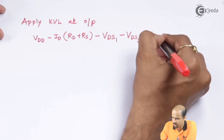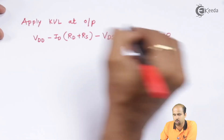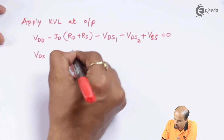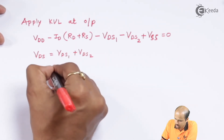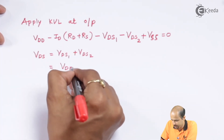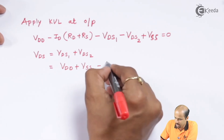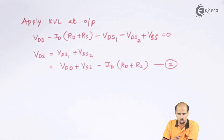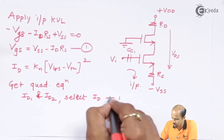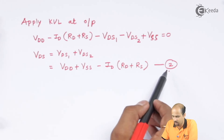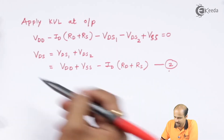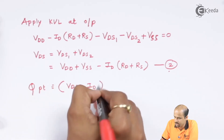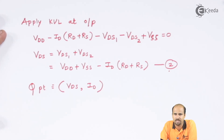From the output KVL, we get the combined VDS: VDS1 plus VDS2 equals VDD plus VSS minus ID·(Rd plus RS). This is equation number two. From equation one we found ID, and from equation two we find the total VDS. The Q-point is therefore (VDS, ID), where ID is common to both transistors and VDS equals VDS1 plus VDS2.